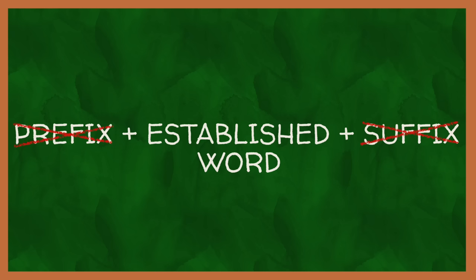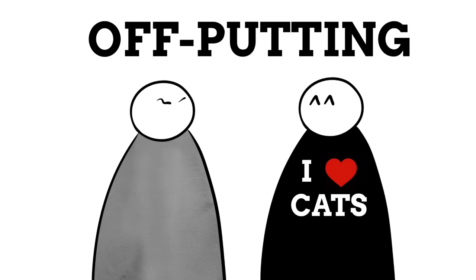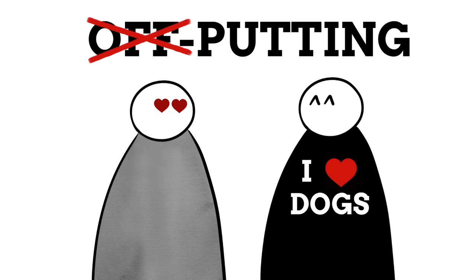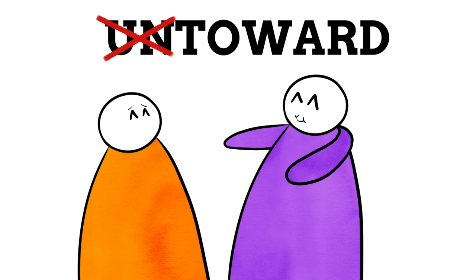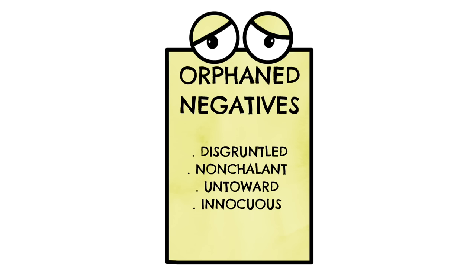There are some cases with orphaned negatives where, when we remove the affix, we are left with something that is an actual word people will understand, but not use in the same way. Take 'off-putting' — it means something has a quality that made you dislike it. Remove the 'off' prefix and you have 'putting', which while a real word ('I'm putting my toys away'), doesn't mean the opposite of off-putting. Similarly, 'untoward' means something was unexpected or inappropriate; 'toward' is a real word but simply means going in the direction of something — it's not the inverse of untoward.